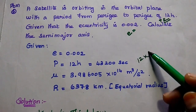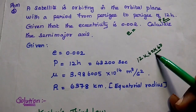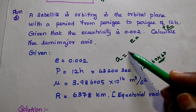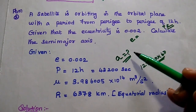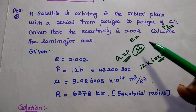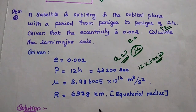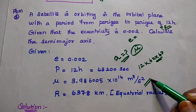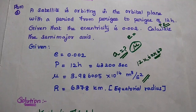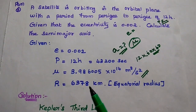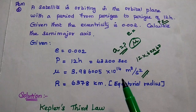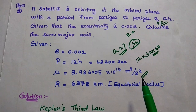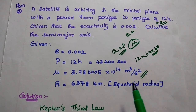As we know, one hour can be written as 60 into 60 seconds. For the semi-major axis calculation, we need the value mu, which is the earth's geocentric gravitational constant. You have to remember this constant value. Mu is equal to 3.986005 times 10 to the power 14 meter cube per second square. This is the earth's geocentric gravitational constant.